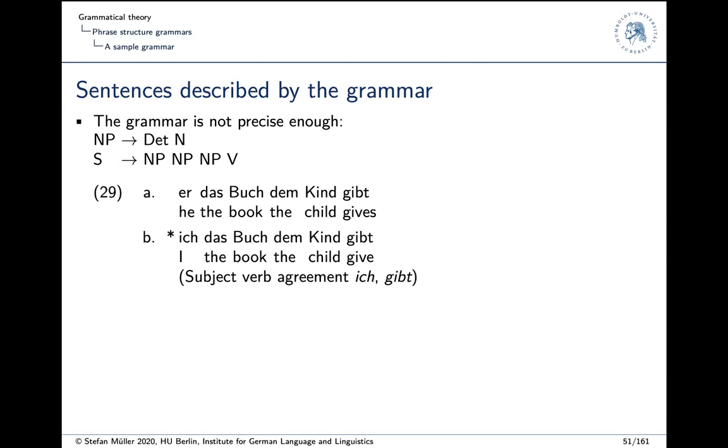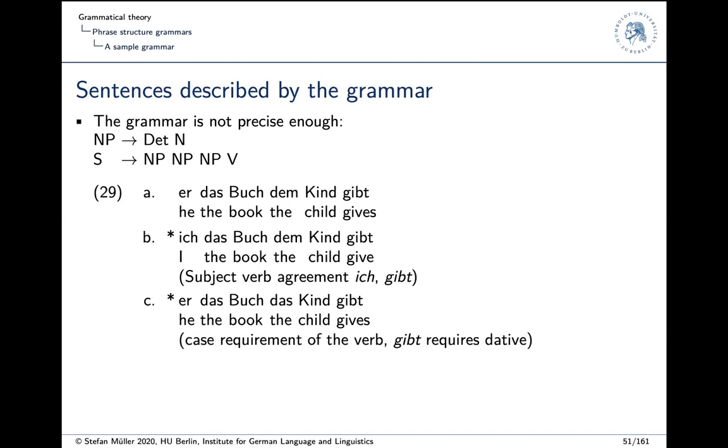Well, yes, subject-verb agreement is wrong. So 'ich' and 'gibt' do not agree. 'Er das Buch das Kind gibt'. So what is wrong here? Again, some form of case requirement of the verb is not met. So 'gibt' requires a dative, but the potential dative object is in the accusative. And then we have a fourth example. 'Er den Buch dem Kind gibt'. So that's difficult if you don't speak German as a native speaker or learn German. So there's determiner-noun agreement in gender agreement that is violated here. So we need something in our grammar to block these things.